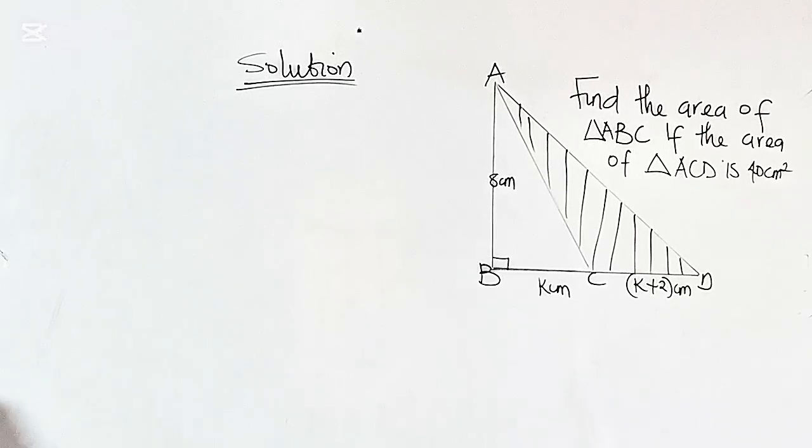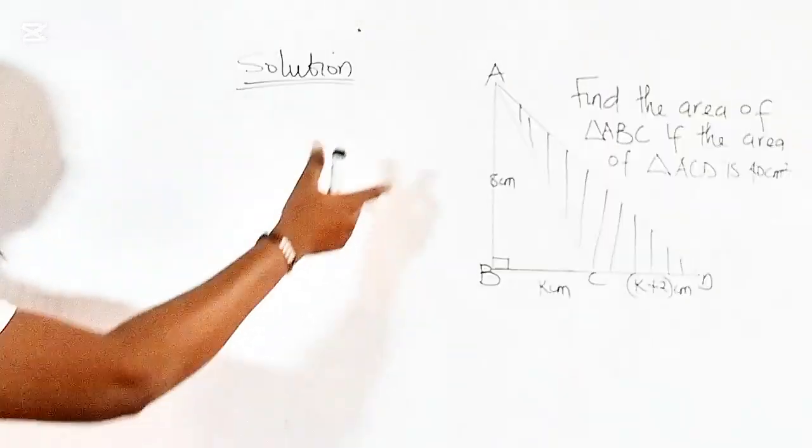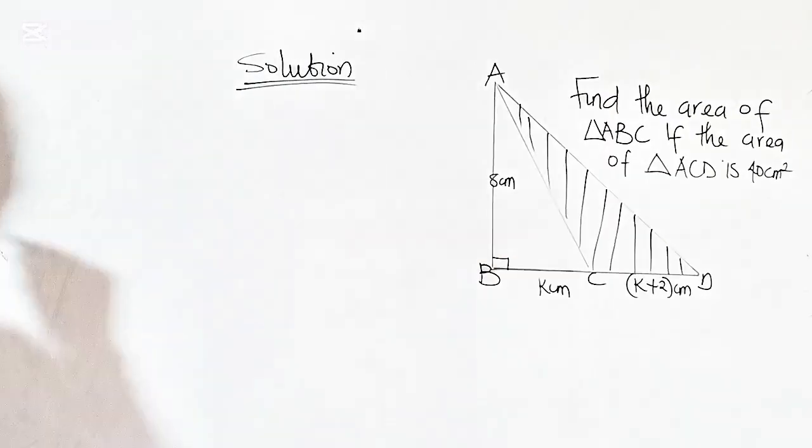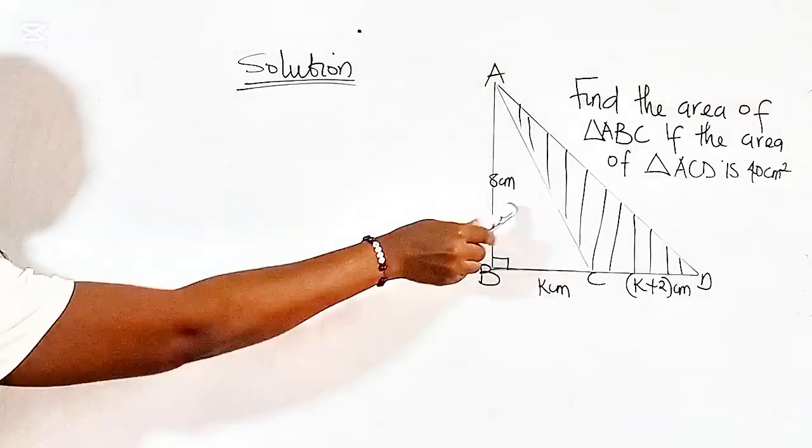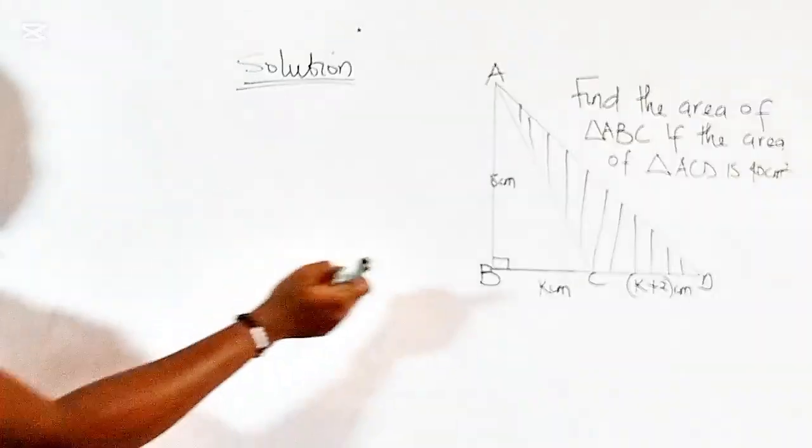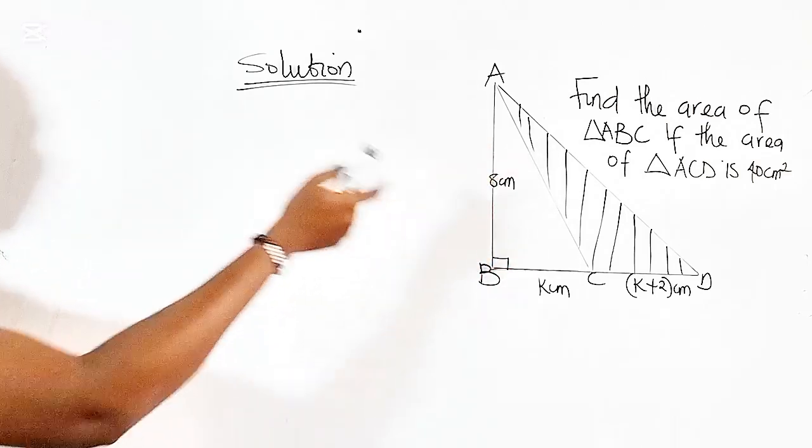So for us to be able to solve this with ease, we will need to figure out the area of the bigger triangle, which is triangle ABD. Then subtract the area of this shaded region from the value in order to find the area of this unshaded portion.